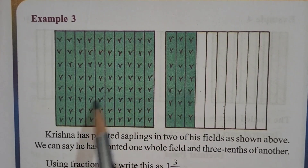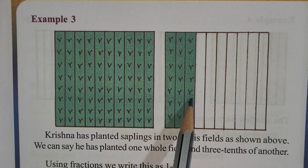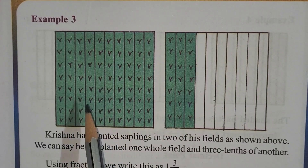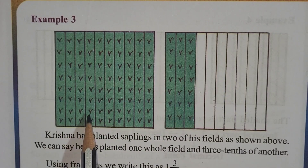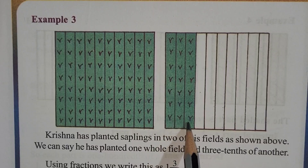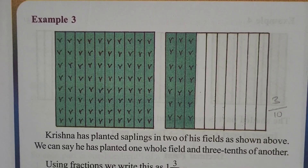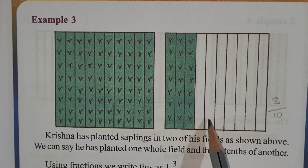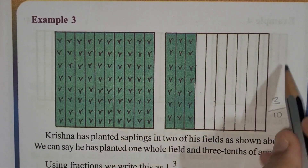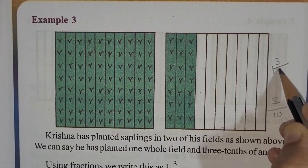Here we have an example. There are two fields, and in each field there are 10 columns. Krishna has planted saplings in two fields. In the first field, he planted the whole field - all 10 columns. In the second field, he planted only three columns out of ten - that is three tenths. So in fraction form: one whole field and three by ten for the second.